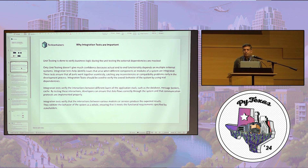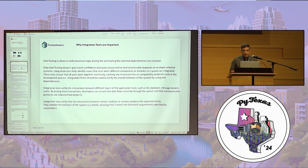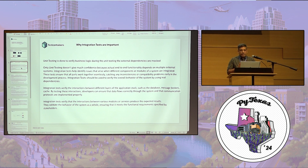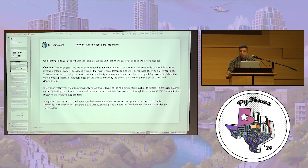Why are integration test cases important? When we write JUnits, those are written basically just to test business logic, and we are unable to test external dependencies. If we have Kafka or Redis in our application, we generally mock the entire pipeline and test the business logic — but we mock the dependencies of Kafka and Cassandra. The issue is that we're not very confident in those test cases.